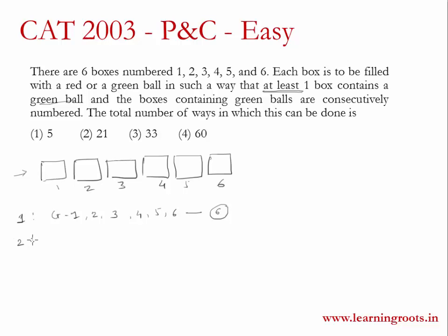Now if we use two green balls, the numbers need to be consecutive. The two green balls can be in boxes 1 and 2, or 2 and 3, or 3 and 4, or 4 and 5, or 5 and 6. This gives us five possibilities for two green balls.